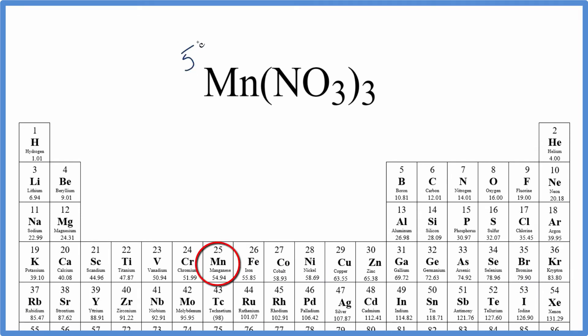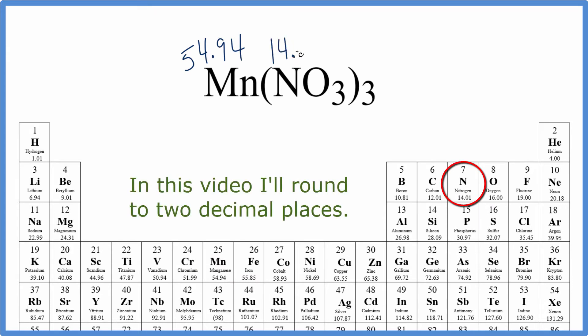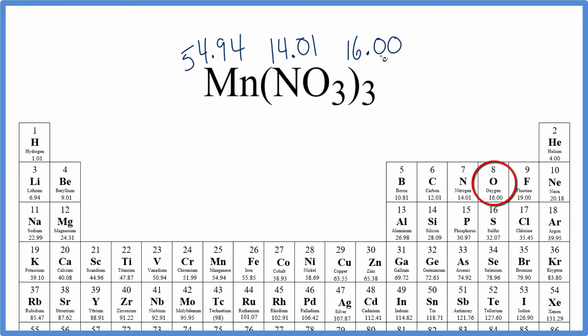Manganese is 54.94 grams per mole. Nitrogen is 14.01, and oxygen is 16.00 grams per mole.